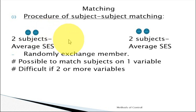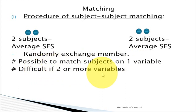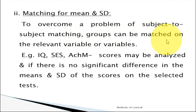Whatever extraneous variable is affecting our experimental research will be controlled to a large extent. However, the difficulty is that it is possible to match subjects on one variable, but when matching on two or more variables, it becomes difficult. The next method is matching for mean and standard deviation. In order to overcome the problem of subject-to-subject matching, groups can be matched on a relevant variable on the basis of mean and standard deviation.